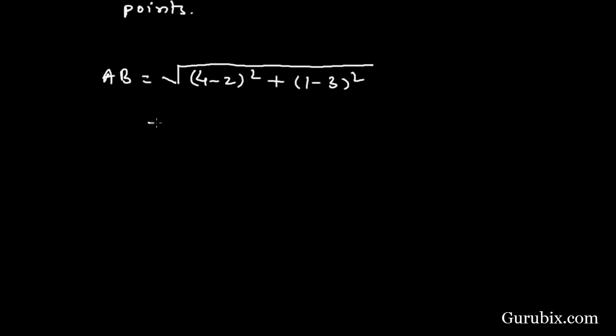If we further solve it, it will be square root of 2 square plus minus 2 square. This means 4 plus 4, which means square root of 8, which equals 2 root 2.